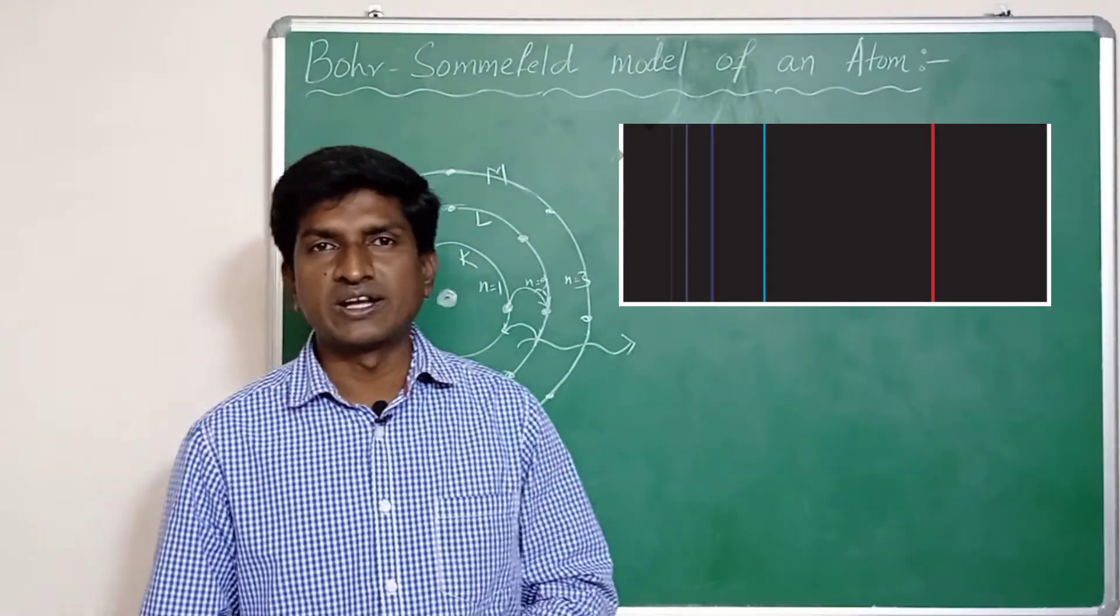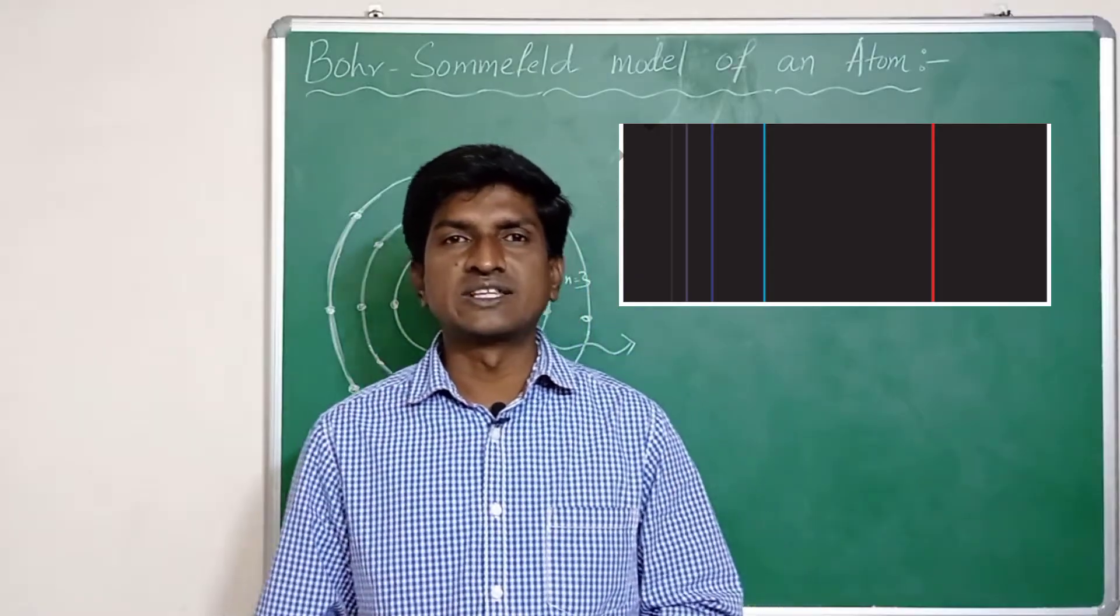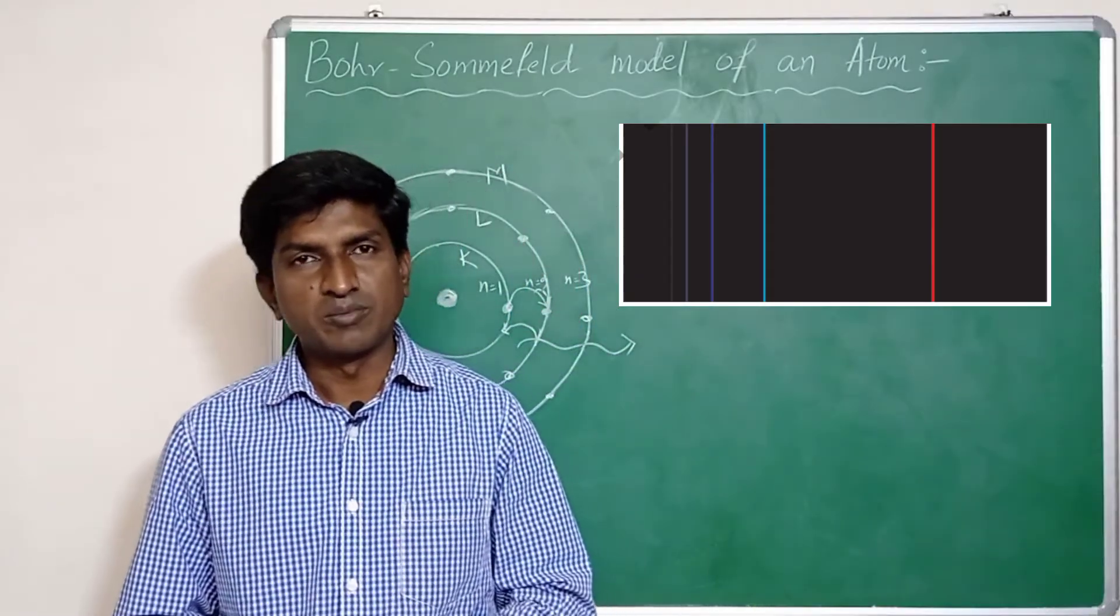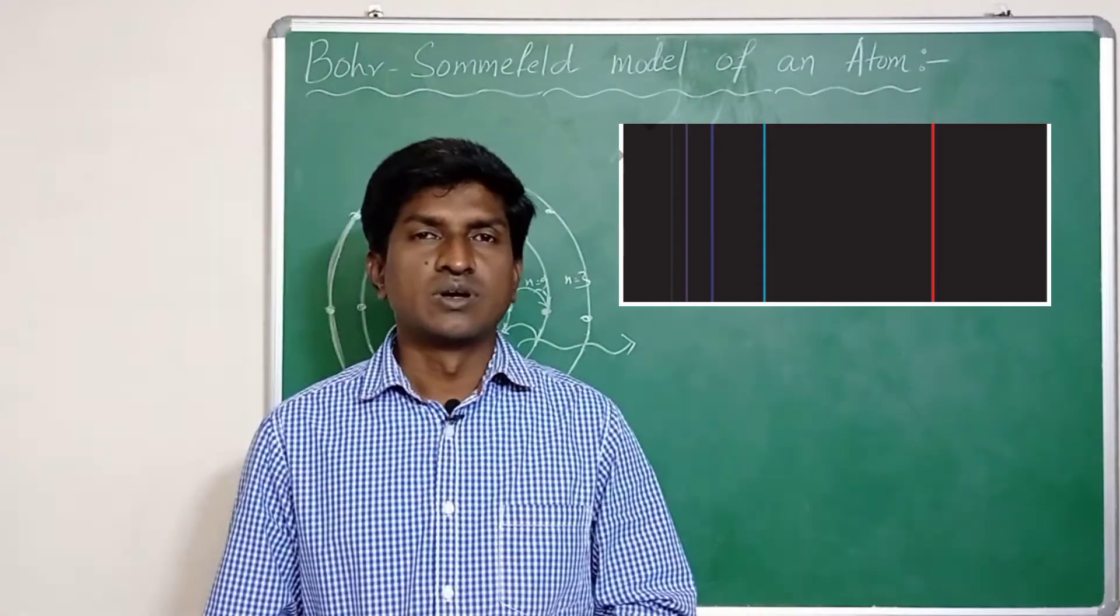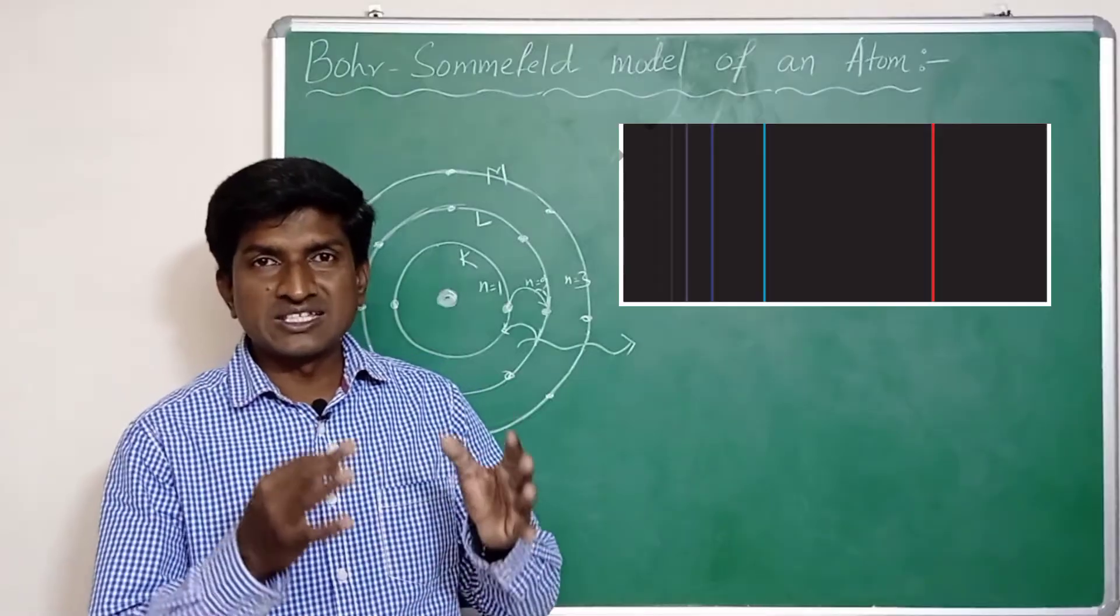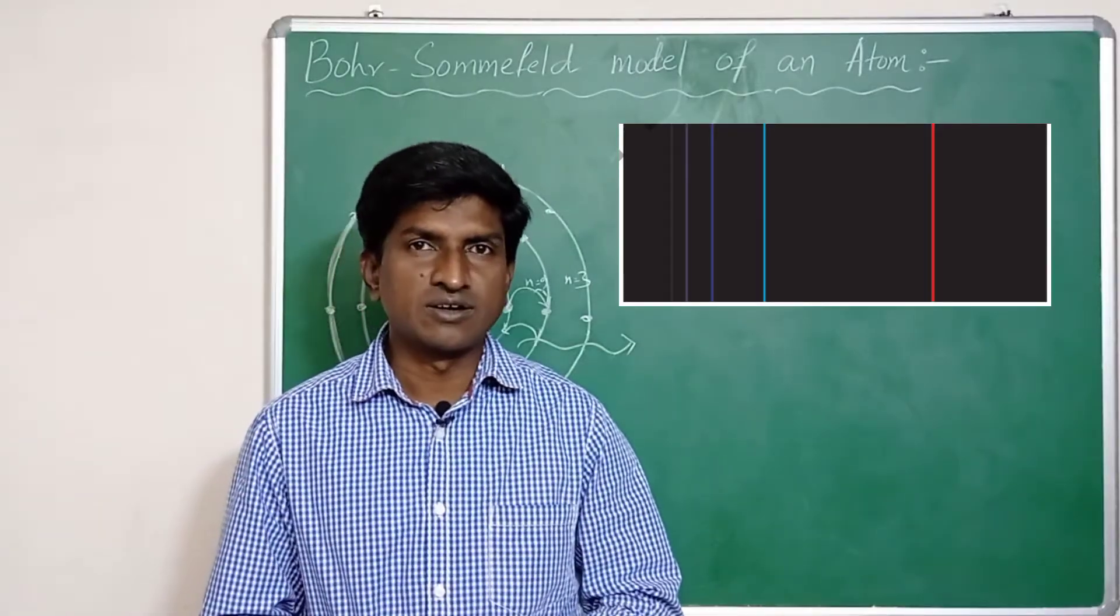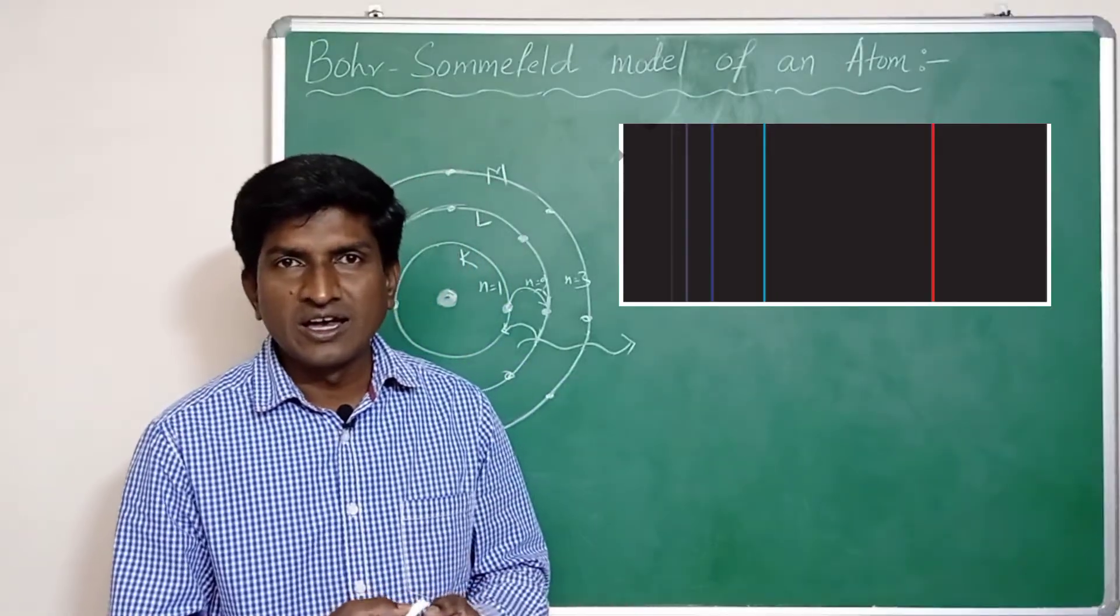But when the spectral lines were observed under high-resolution spectroscope, the spectral lines appear as a group of lights or finer lines. This fine spectra has not been explained by Bohr's model.